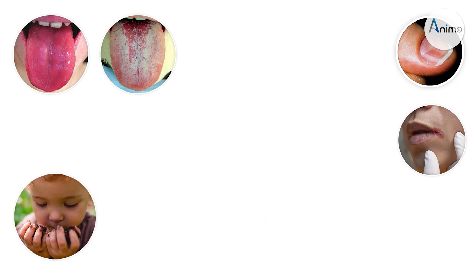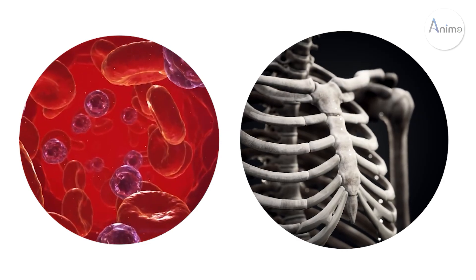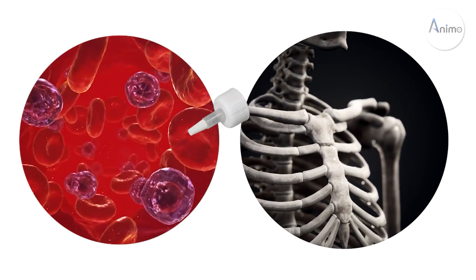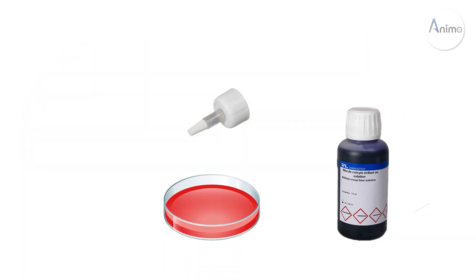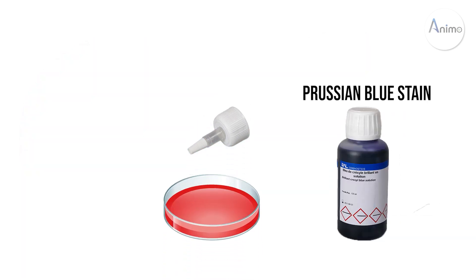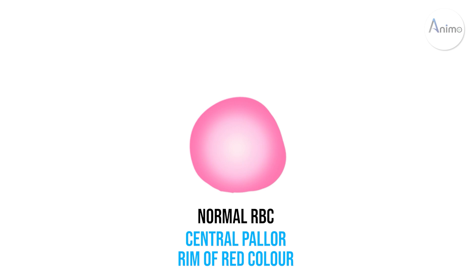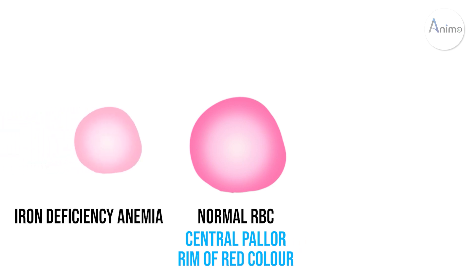Now for the microscopic features — we take a sample from blood and bone marrow biopsy and use the Prussian blue stain to detect the presence of iron stores in these cells. A normal RBC has a central pallor and surrounding rim of red color. In iron deficiency anemia, this RBC turns into a small size known as a microcyte, the red brim becomes pale, and this is known as a hypochromic cell.